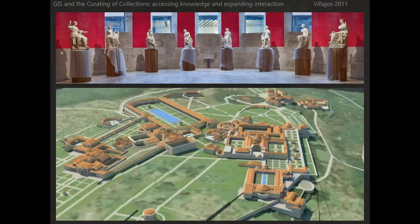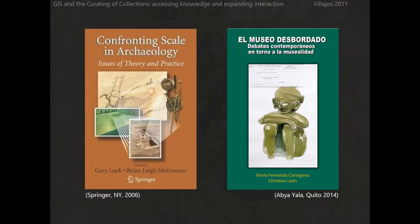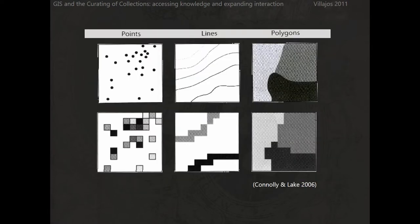The Prado — everyone who knows that museum has in mind that it's a museum of paintings, but there are also archaeological remains in the museum, like for example these muses that come from Villa Adriana in Rome.